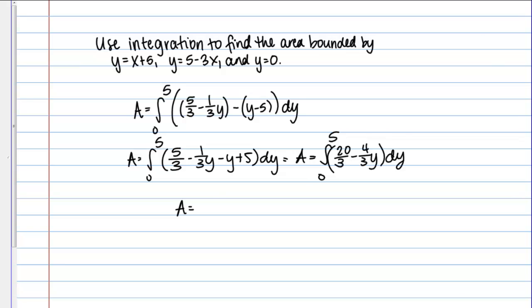Then I simply take the antiderivative. That should give me 20 thirds y minus 4 thirds y squared over 2. I'm evaluating from 0 to 5. That's the same as 20 thirds y minus 2 thirds y squared from 0 to 5. I plug in. If I plug in 5, it looks like I should get 100 thirds minus 50 thirds. If I plug in 0, I'm just going to get 0. It looks like my final answer here should be 50 thirds for the area of this region.